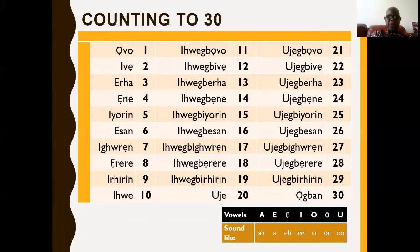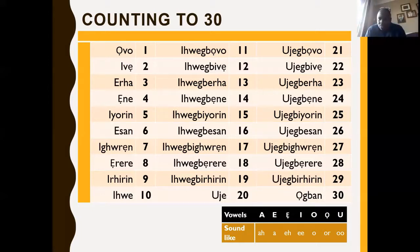Ujje. Iqwe gbovo. Iqwe gbiveg. Iqwe gberra. Iqwe gbenne. Iqwe gbiyunni. Iqwe gbesa. Iqwe gbibwne. Iqwe gbelele. Iqwe gbivrili.